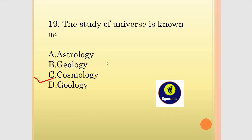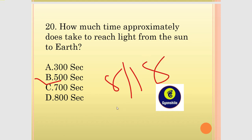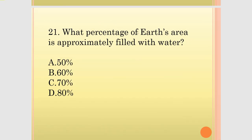The study of the Earth is known as Geology. How much time approximately does it take for light to reach from the sun to the earth? The answer is approximately 500 seconds. What percentage of Earth's area is approximately filled with water?